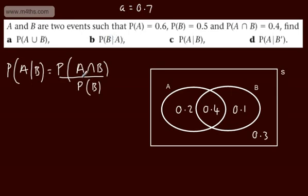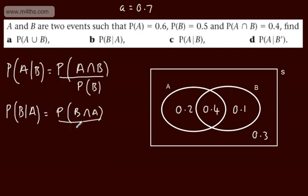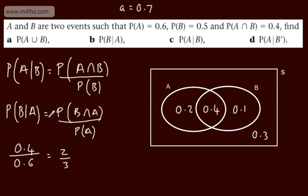The probability of B given A: the probability of B intersection A divided by the probability of A is 0.4 divided by 0.6, which gives us 2 over 3, or 0.6 recurring.